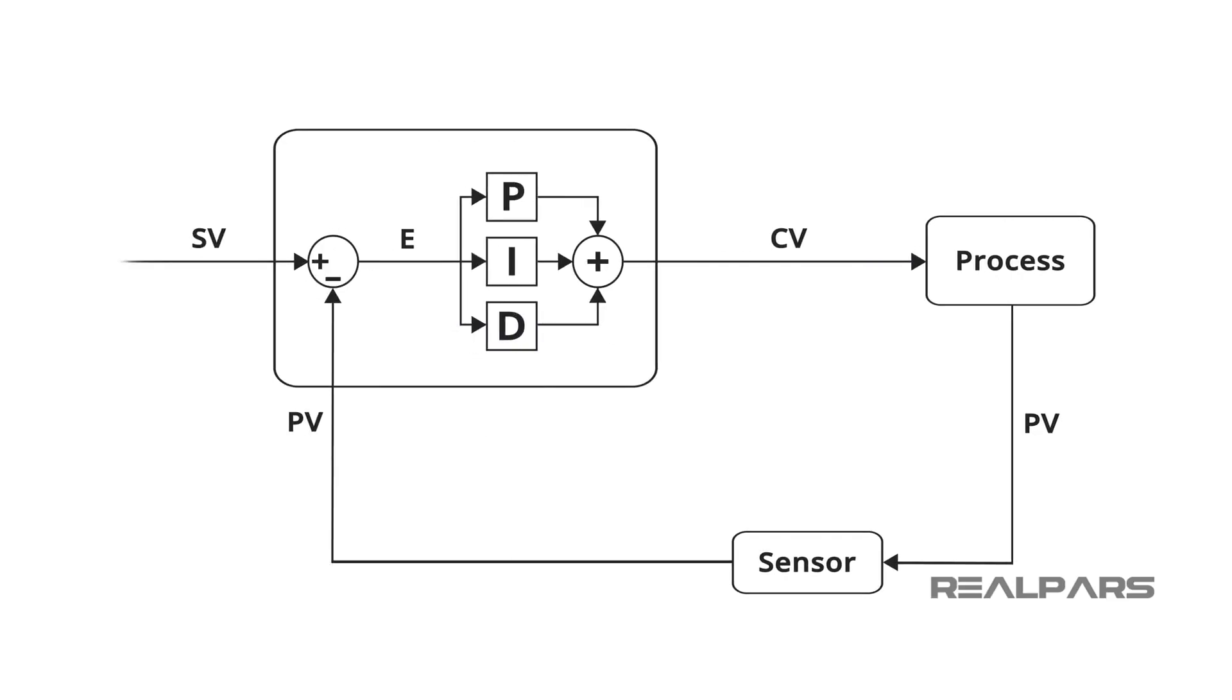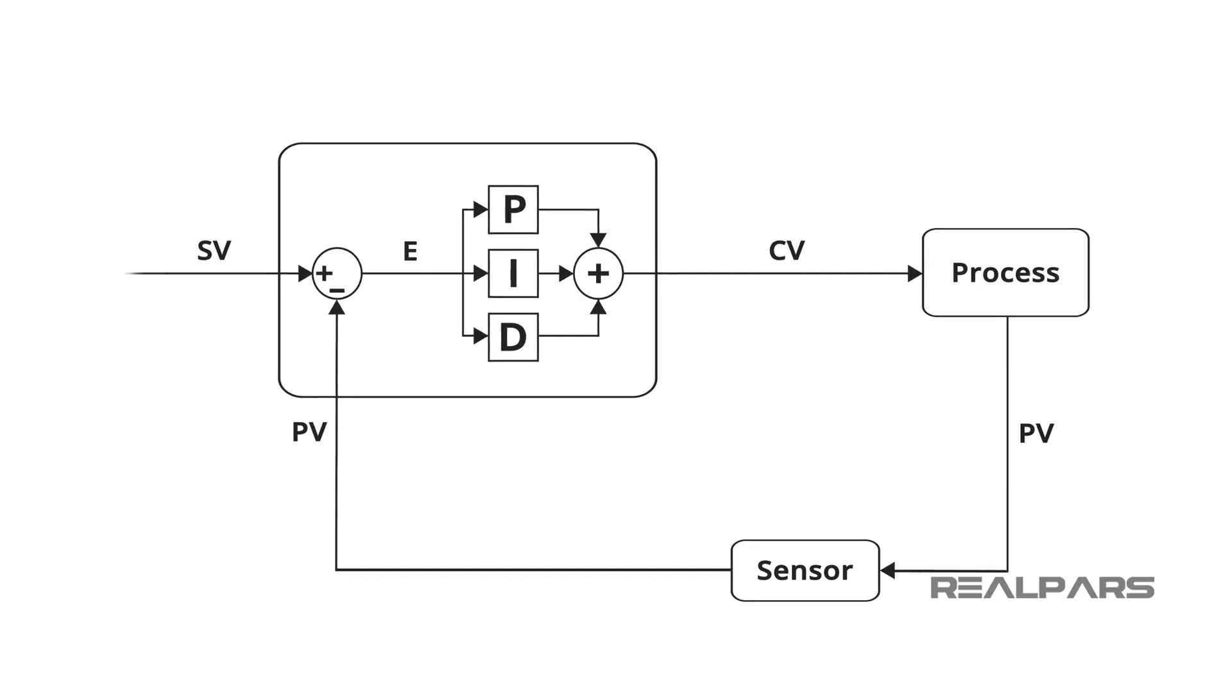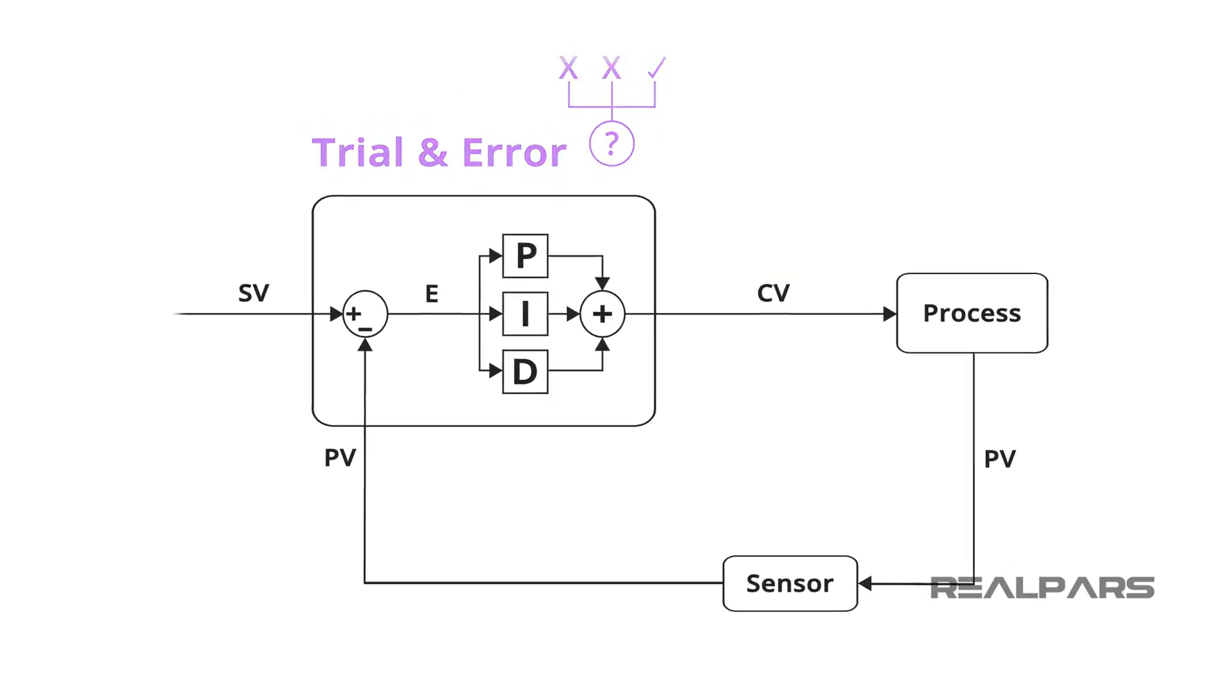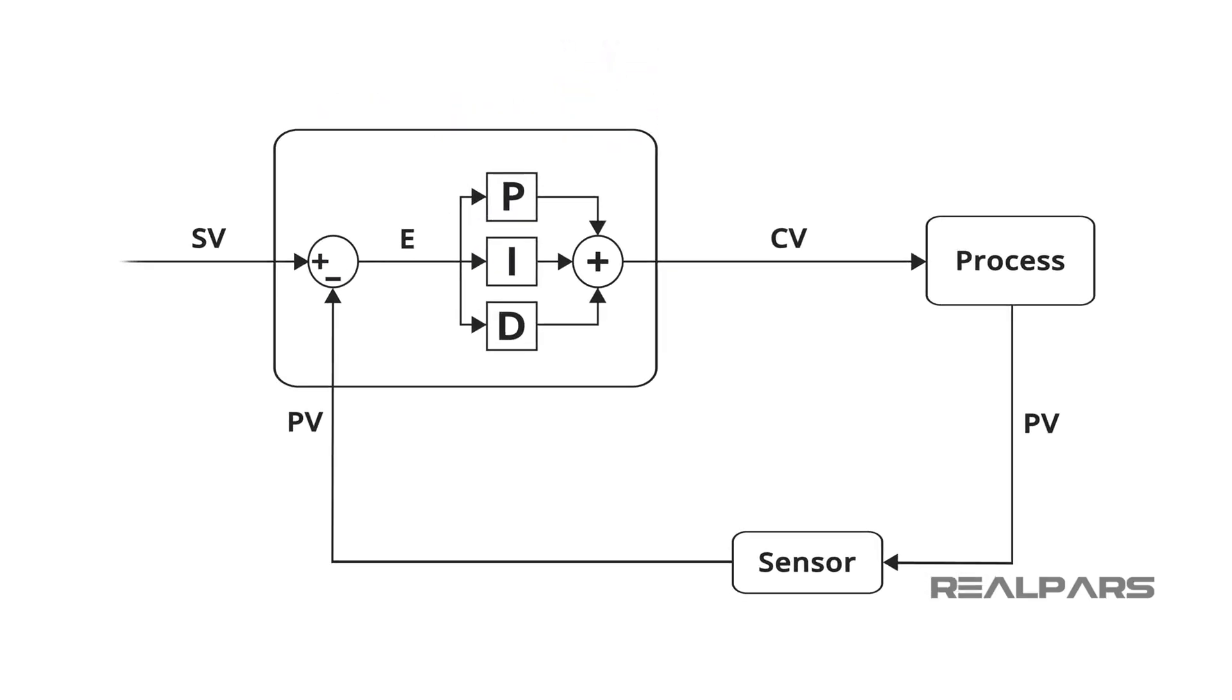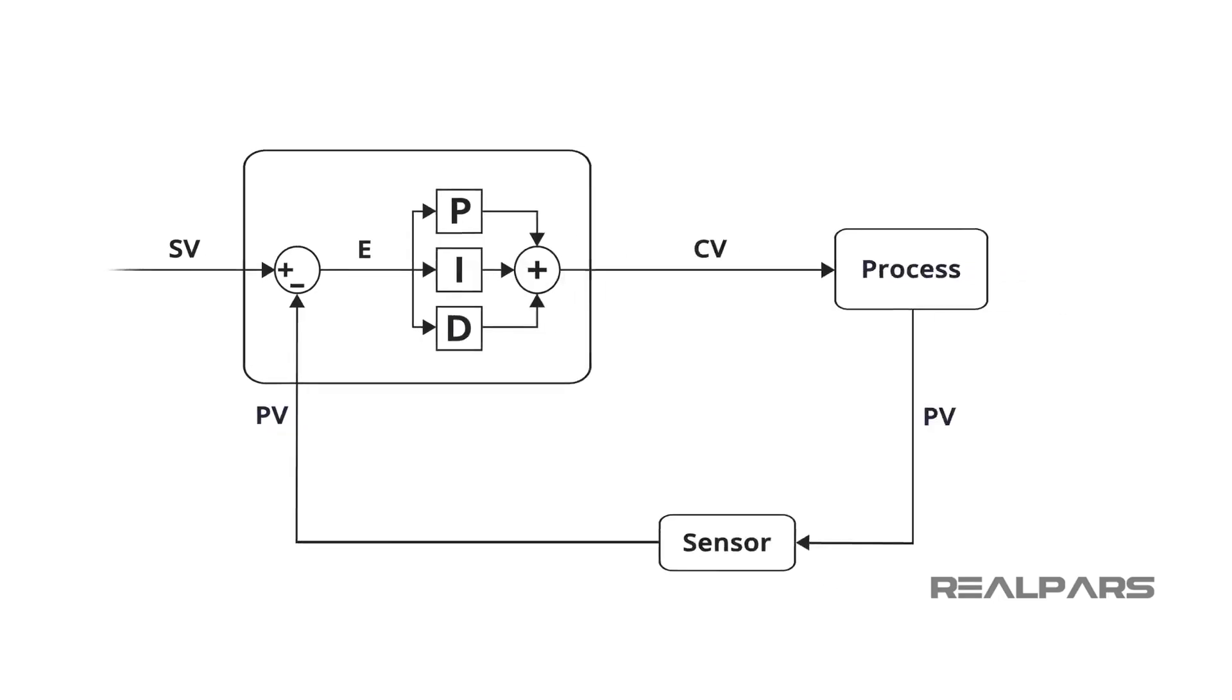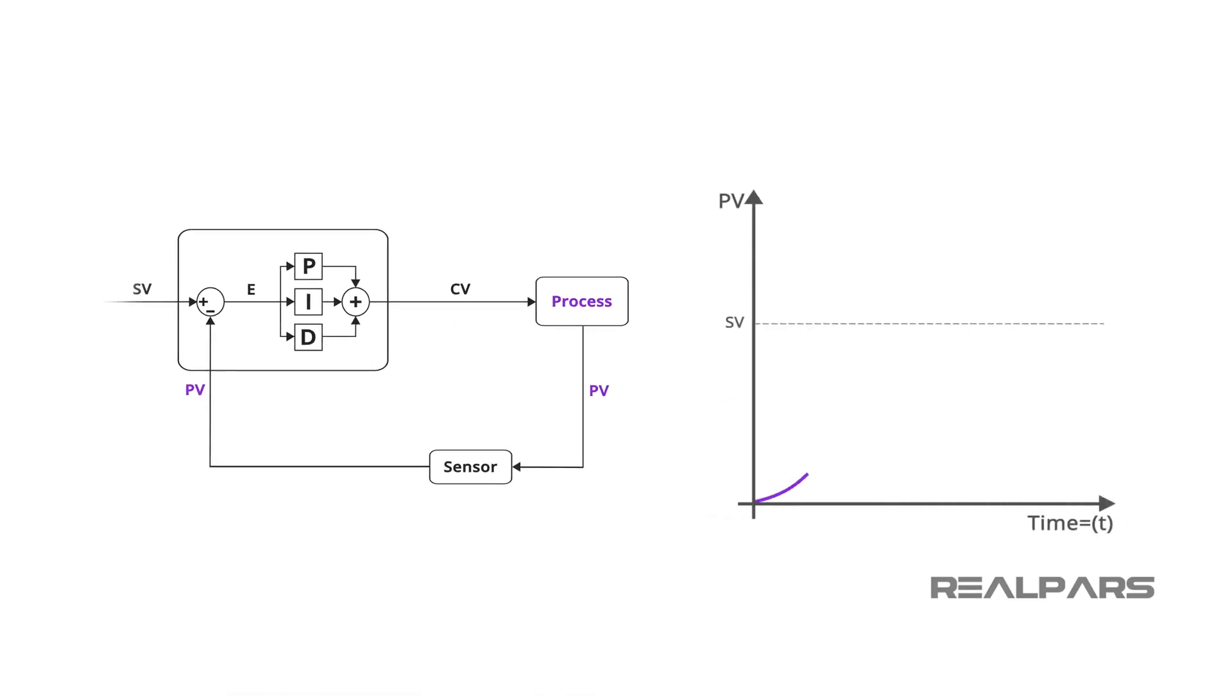There is a science to tuning a PID loop, but the most widely used tuning method is trial and error. There are other methods that require a multi-step process to determine where your numbers should be. Your goal is to control the process when plotted in a trend as a nice even trend line with minimal oscillation.